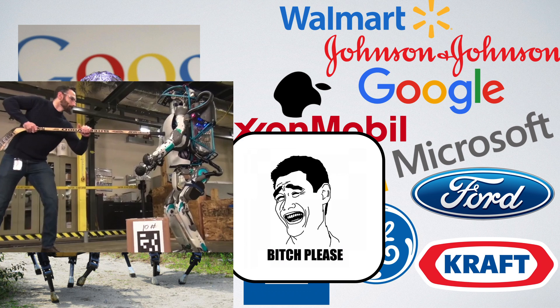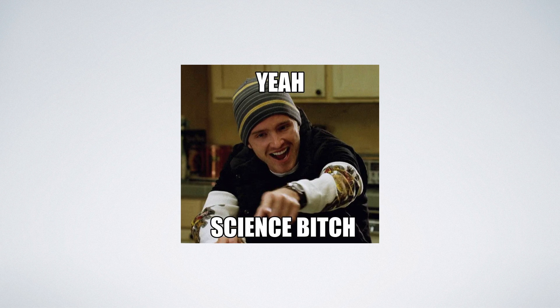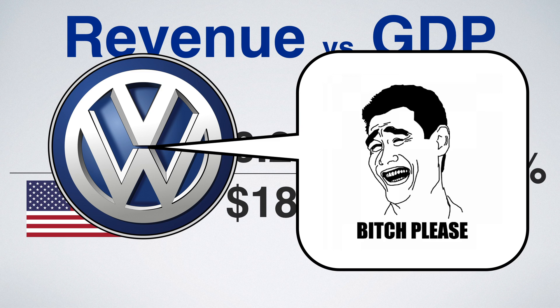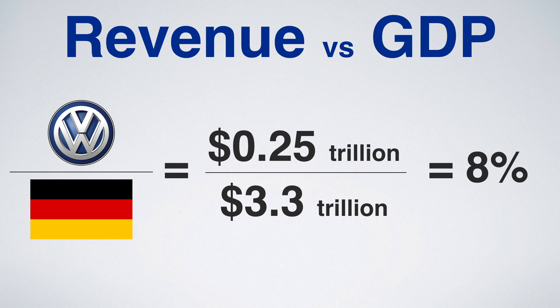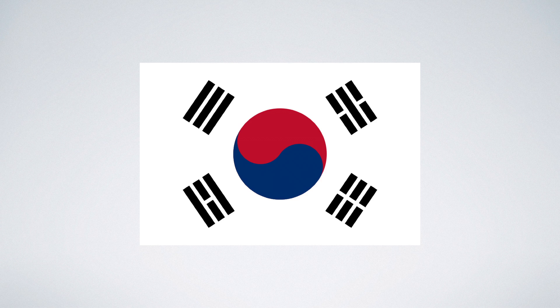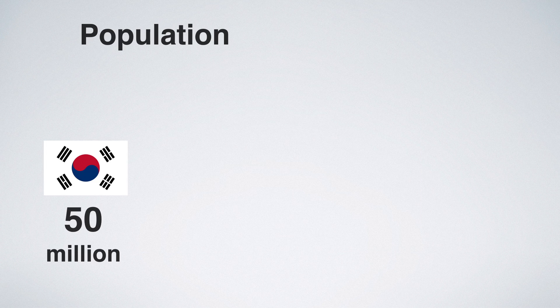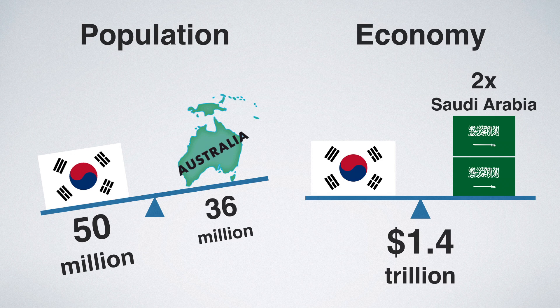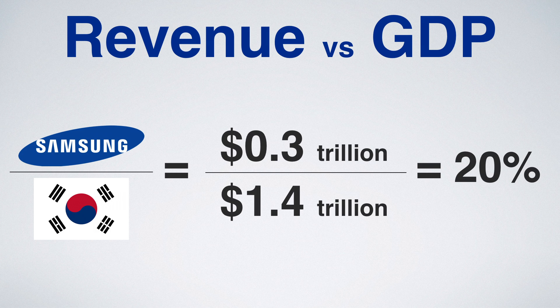Back to business. If you do the math, you'll find that Apple's revenues are around 1.3% of US GDP. If you think that's much, try VW of Germany — their revenue stream is 8% of the German economy. But even that doesn't compare to the mother of all country-dominating companies: Samsung. South Korea ain't a small country — they have a population of around 50 million and a GDP of 1.4 trillion. Samsung runs around 20% of it.